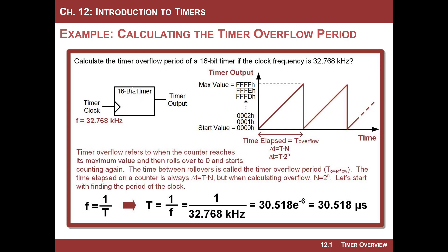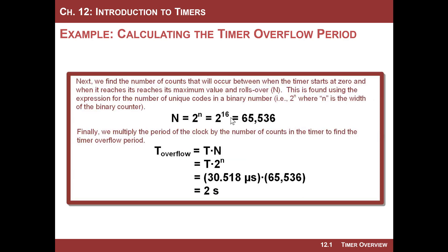And so all I need to do is I need to know the number of bits in the timer, and in this example, it's a 16-bit timer. So I simply find the period of the clock. Once again, it's 1 over the frequency, which is 1 over 32k. That comes out to be 30.5 microseconds. So every 30.5 microseconds, the counter increments.